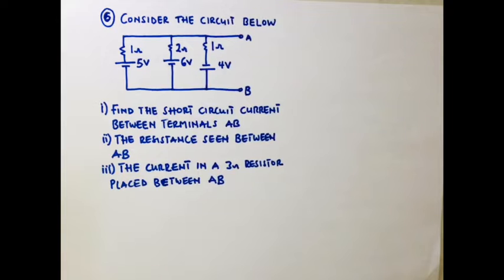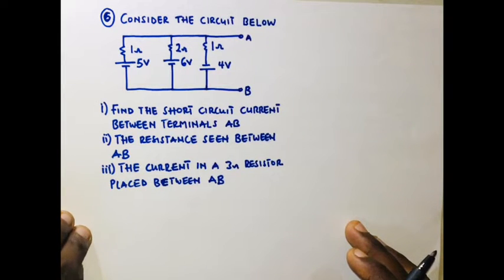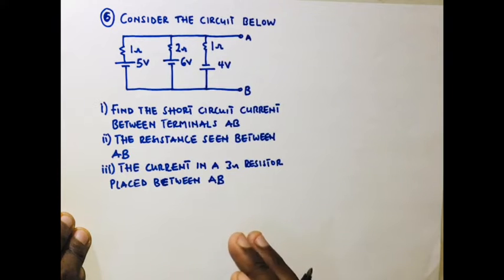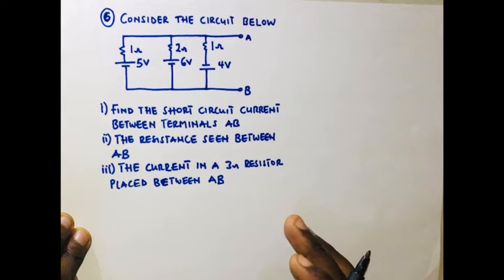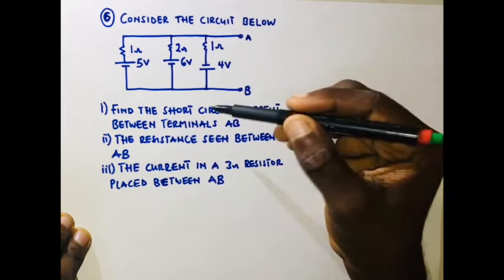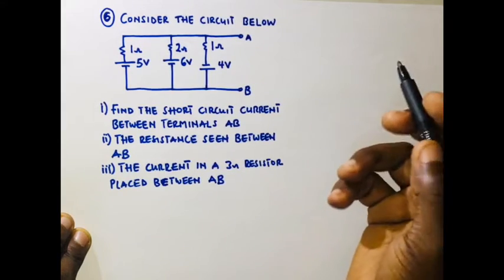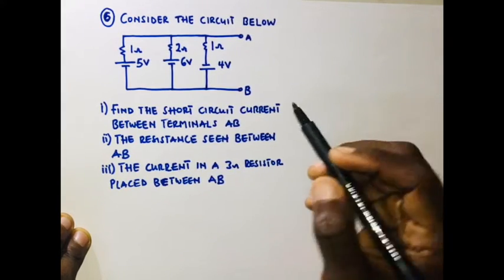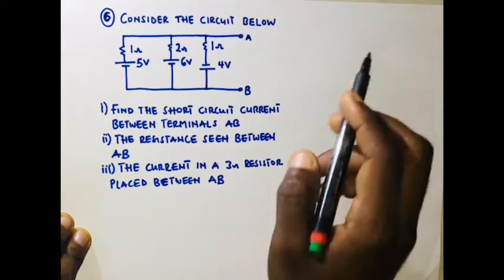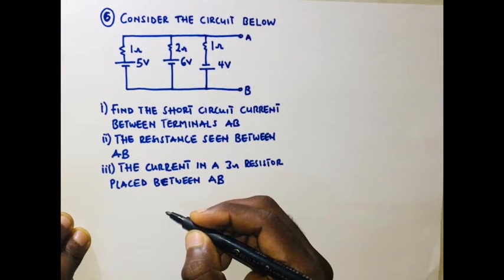In this question we have more than one source — we have three voltage sources — which means we can combine Norton's theorem and superposition theorem to find the Norton's current. To find the Norton's current, we are going to introduce a short circuit between the two terminals to get the short circuit current Iₙ. Because we are combining Norton's theorem and superposition theorem, we are going to consider one source at a time and deactivate the other two sources.